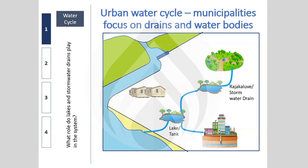Before any urbanization, drains were essentially river channels. When it rained, water accumulated and was carried through channels into natural wetlands, tanks, or lakes, and eventually into rivers and the ocean. The drains were the natural drainage network of the landscape.